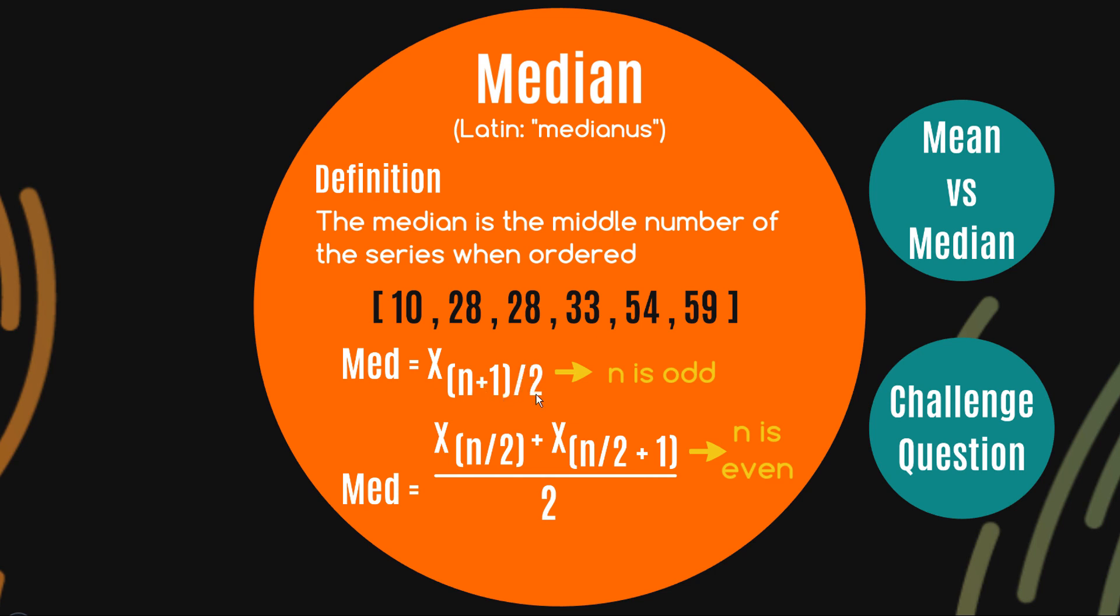But if n is even, as we have here, we have six, this just tells us to average out the third and fourth observation, which you knew anyway right? It's pretty simple. But make sure of course that you order your series before you try to find the middle number, right? It doesn't much make sense to try to find the middle number of an unordered series.